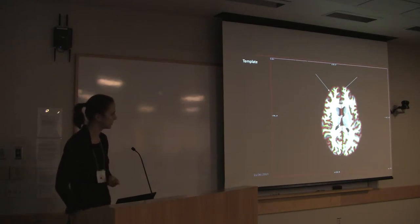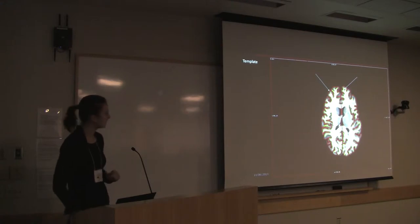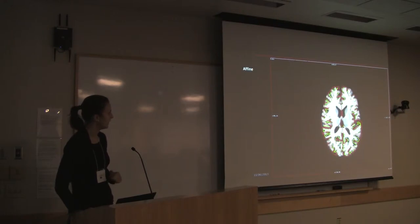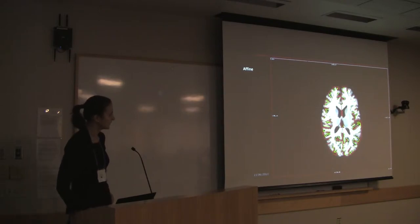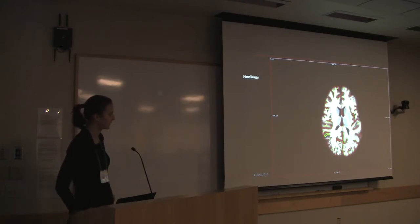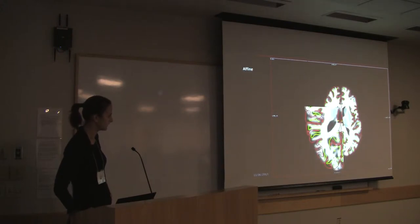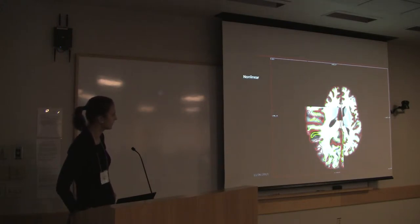This is another demonstration of the problems we face when not using a highly accurate nonlinear registration. Here's our template, and we use this image to extract the surfaces from. We find an affinely aligned image from subject two to subject one — overall we have good correspondence between the images, but the cortical areas are not aligned. A nonlinear volumetric morph definitely improves the correspondence between the two volumes, however if I zoom in I can show you there are still some inaccuracies that remain.